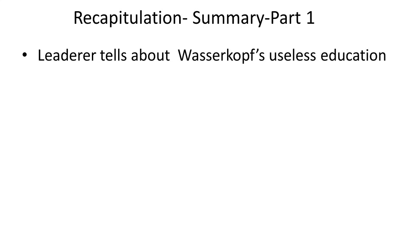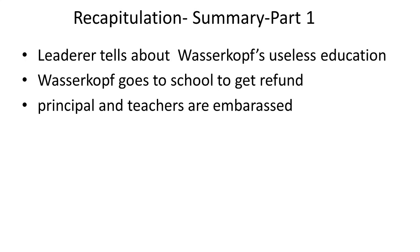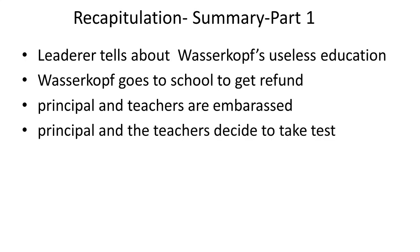Before we go to the second part, let me recapitulate the first part. We know that Vesokov the student goes to Lederer, and Lederer talks about his useless education. He tells him that his education was not useful in getting any job, so he should go to the school and get his money back. Listening to this, Vesokov goes to the school to get the refund, and when he goes there, the principal and the teachers were embarrassed because they never heard of a student coming back to school to get the tuition fee back on the ground that his education was useless.